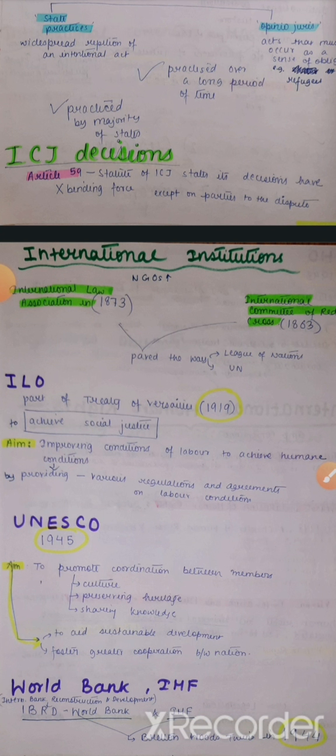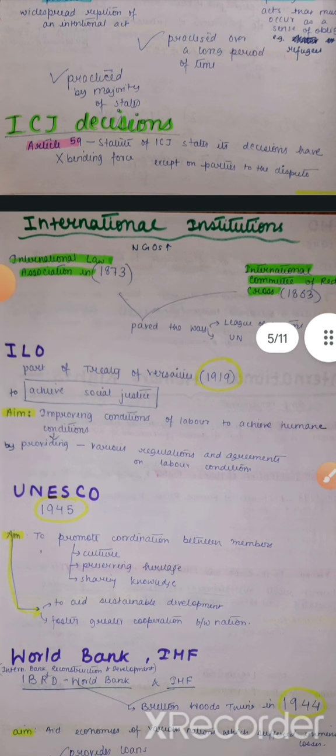After this we come to UNESCO — United Nations Educational, Scientific and Cultural Organization. It was established in 1945. It promotes coordination between members by promoting culture, preserving heritage, and sharing knowledge. Because simply economic or political cooperation is not enough to ensure real mutual benefit.